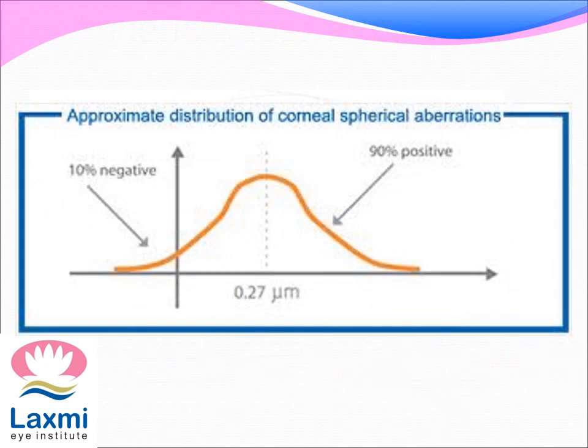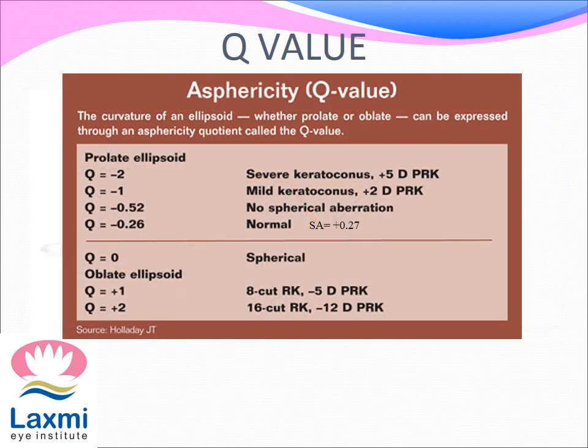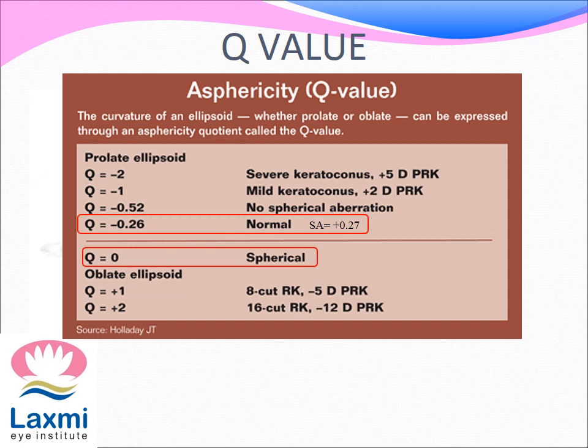The normal corneal spherical aberration is 0.27 microns. On the distribution curve, we see that 90% of the spherical aberration falls on the positive side, while 10% is negative spherical aberration. The asphericity can also be calculated by the Q value, which expresses the curvature of an ellipsoid — whether it is prolate or oblate. A spherical surface will have a Q value of 0. A normal prolate corneal surface with a spherical aberration of plus 0.27 has a Q value of minus 0.26.